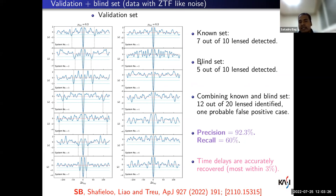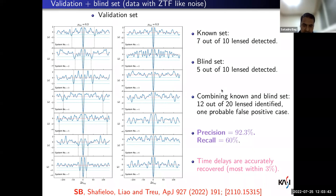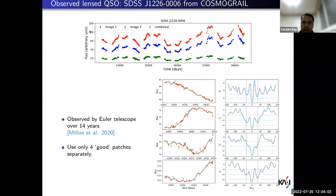We apply the same method on the validation and blind set but now with ZTF-like noise. In combination we could recover 12 out of 20 lensed systems — recall is 60% — and we get only one false positive case, so precision is still over 90%. This is with ZTF-like noise. In all these lensed cases, we recover the time delay very accurately, most within just three percent. This is summarized in one paper.